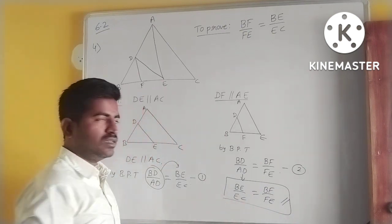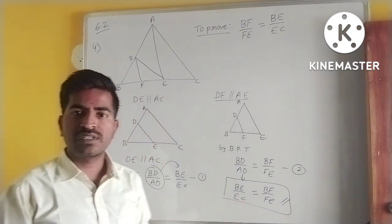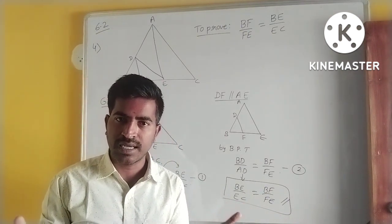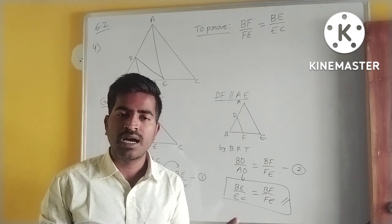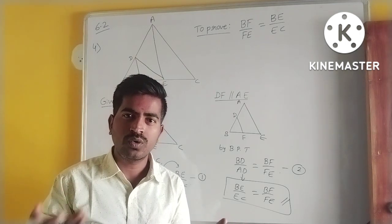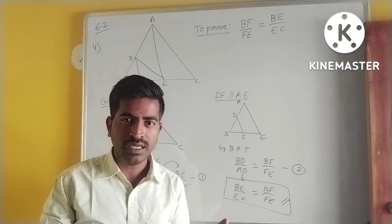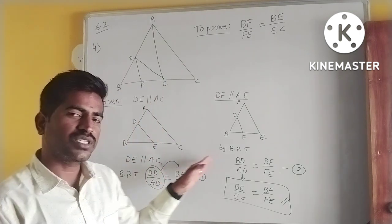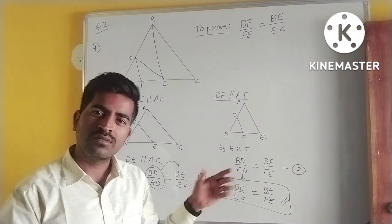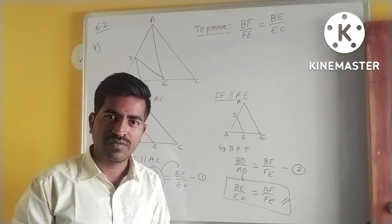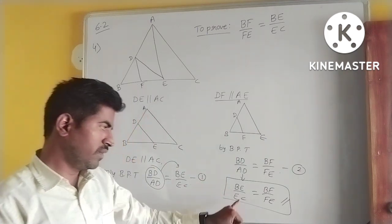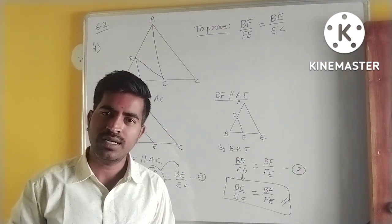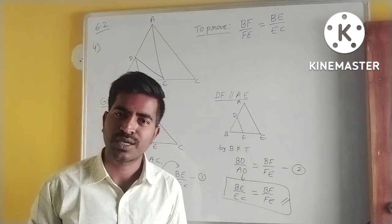Whenever two triangles are given, make the triangles separately, apply BPT to each, form Equations 1 and 2, then compare the two equations — you will get the result like this. That's it. Thank you.